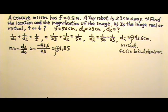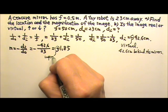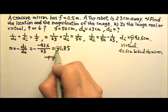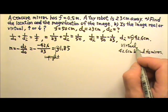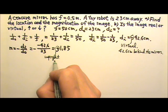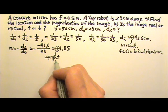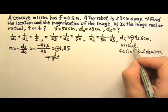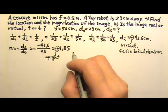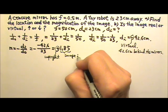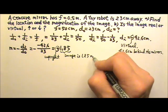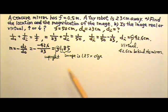Positive here tells us that the image must be upright. And we will get a positive magnification when dI is a negative number. So we always get upright image for a virtual image. At least that's true when we have a single mirror or a single lens forming an image. So virtual image is related to the upright image. And this 1.85 means the image is 1.85 times the size. So if the height of the toy robot is h, the image would have a height that is 1.85 times h.